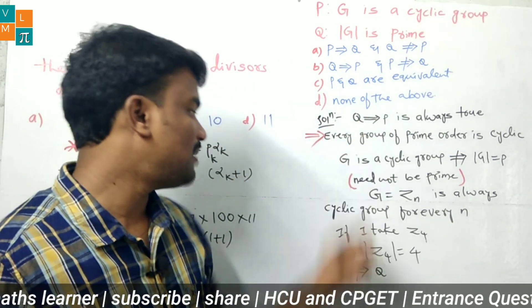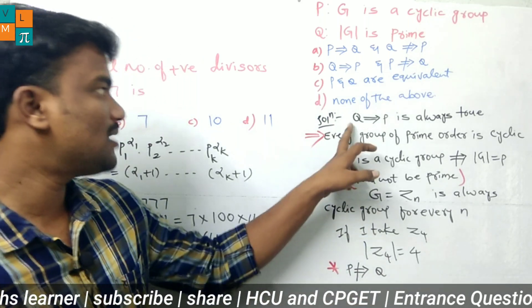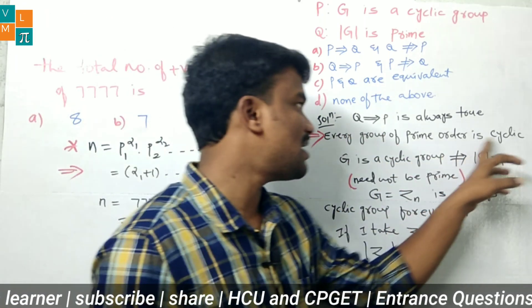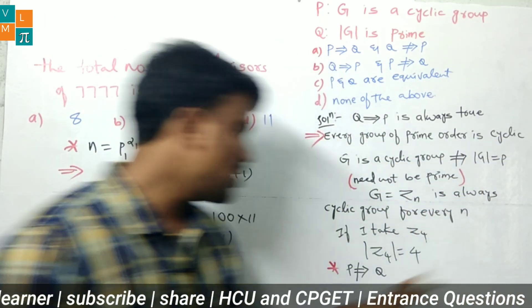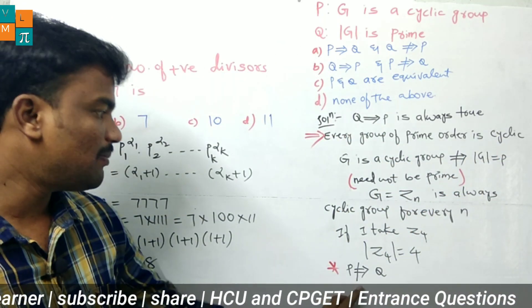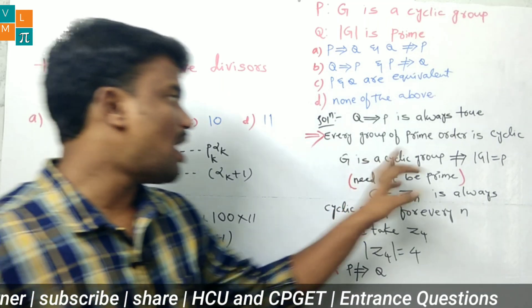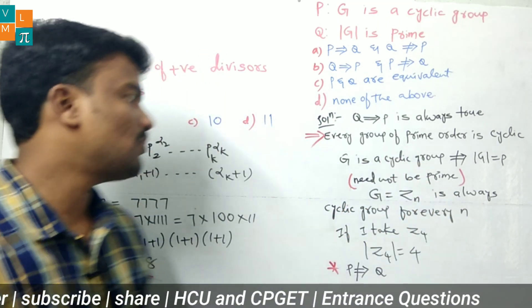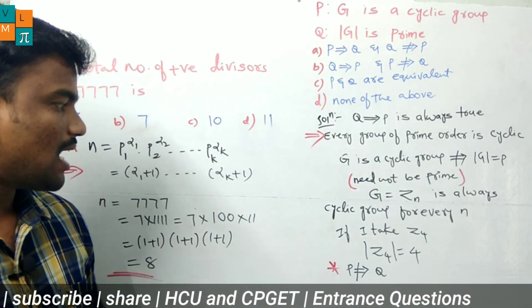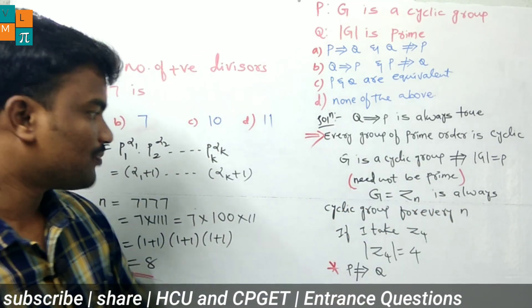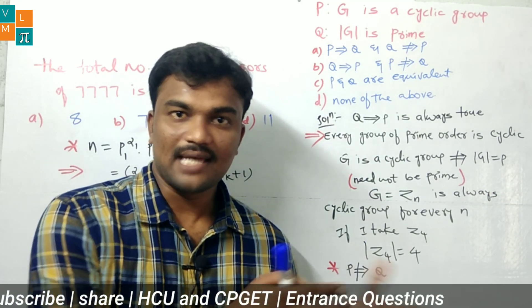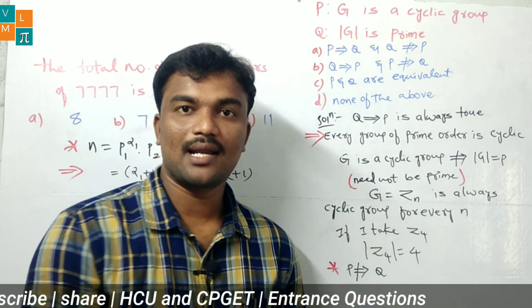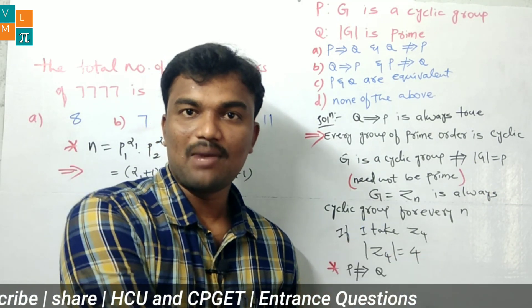So Q implies P — every group of prime order is cyclic — but P does not imply Q, since a cyclic group's order need not be prime. The correct answer is option B.